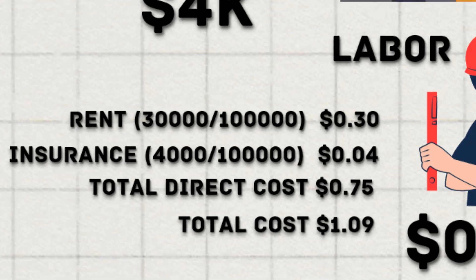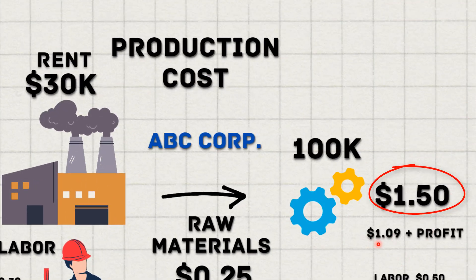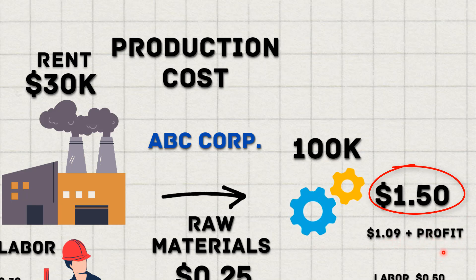ABC's managers must price the widget above $1.09 to earn enough gross margin to cover overhead expenses and earn a profit for the company. If the market price for the widget falls below a dollar, managers will need to lower its production costs, or if that is not possible, stop producing the widget.